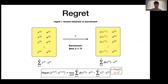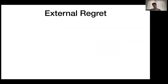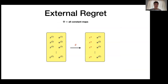A classic form of regret is external regret, where the set of transformations is the set of all constant maps. This means we want our algorithm's reward to be comparable to the reward of all fixed actions over time. If we can compete well with all different fixed actions, we have good external regret.